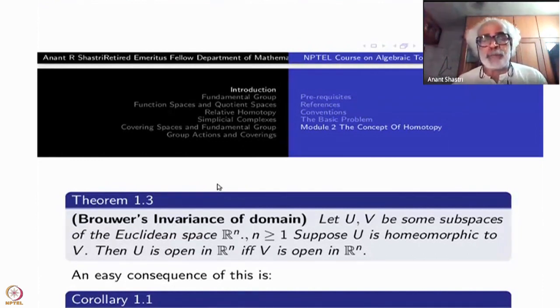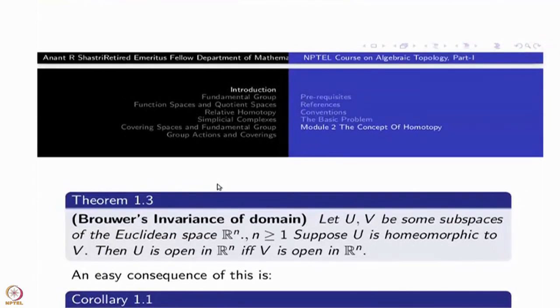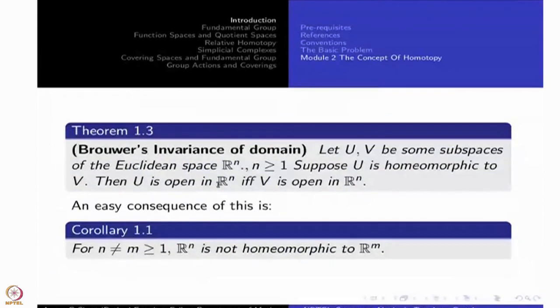If something is a domain, then homeomorphic copies of that inside the same R^n, they are all domains. As an easy consequence of this, if you change the dimension, for n not equal to M, R^n will never be homeomorphic to R^m.